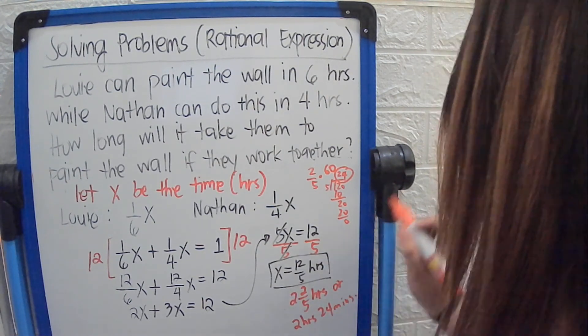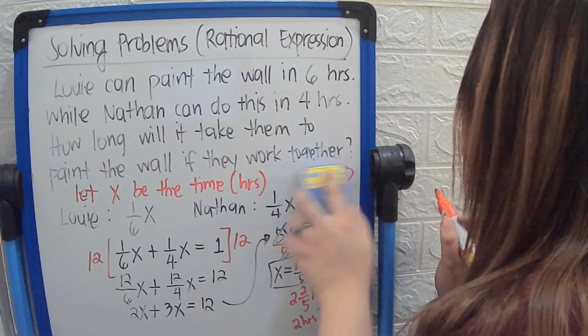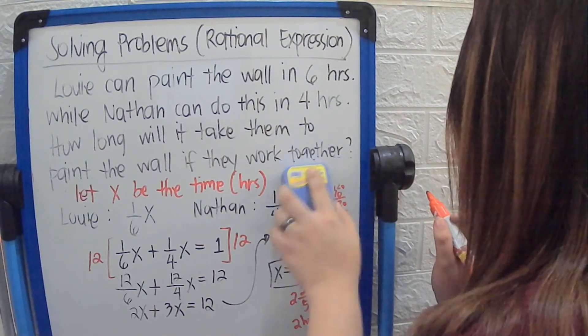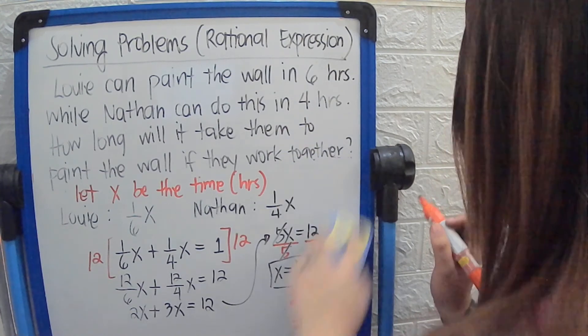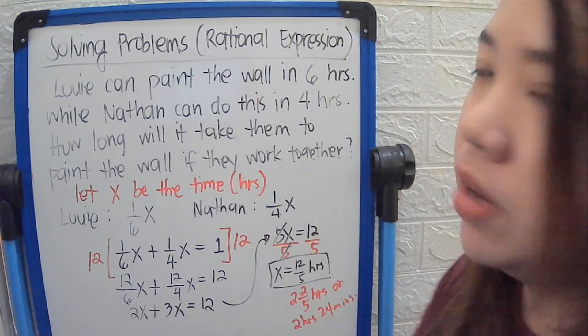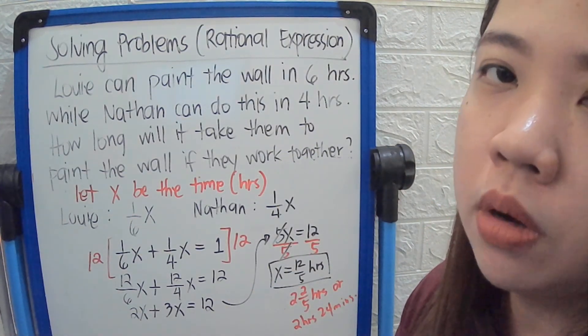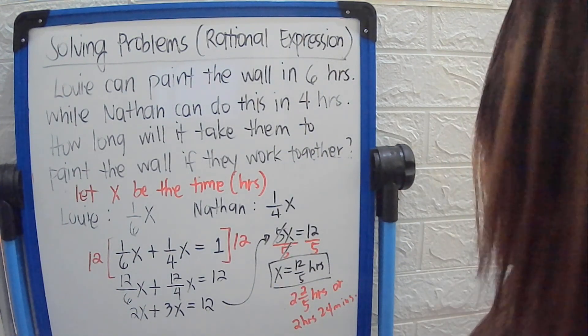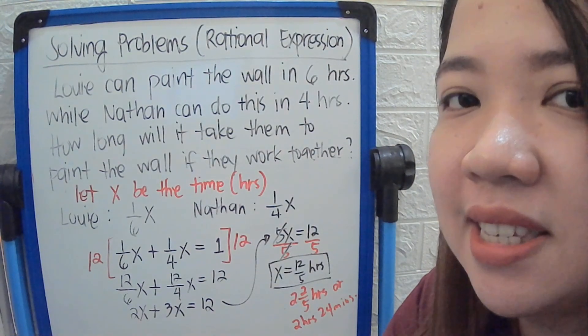So if Louis and Nathan work together, they can finish painting the wall within 2 hours and 24 minutes.